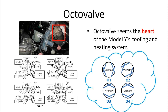For the two graphs below, the difference is the radiator: by changing the radiator valve, the radiator can either be used or bypassed. I will use these drawings to represent different modes of the octa valve in the following schematics — O1, O2, O3, and O4.